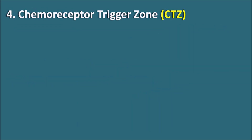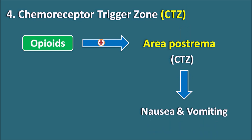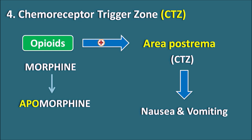The fourth stimulatory target is the chemoreceptor trigger zone (CTZ). Opiates act like toxic chemicals on the area postrema within the CTZ. When they stimulate this center, they produce nausea and vomiting — an important side effect of many opiates, particularly morphine. Morphine is a modified phenanthrene derivative. When hydrolyzed, it gives the metabolite apomorphine, which acts as a dopamine agonist and can be used in treatment of Parkinson's disease. But apomorphine also acts as an emetic because it is derived from opiates. Both morphine and apomorphine can stimulate the CTZ to induce nausea and vomiting. Apomorphine is particularly used as an emetic in case of poisoning.